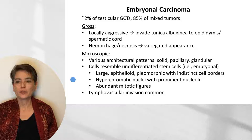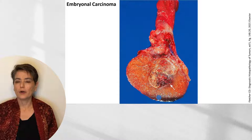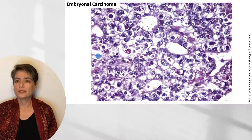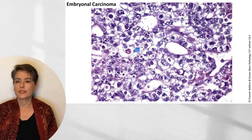Lymphovascular invasion is common. Here at the gross level you can see the spermatic cord and healthy testis with the focus of embryonal carcinoma indicated, with an arrow pointing to an area of hemorrhage. In contrast to seminoma, there is a variegated appearance. Microscopically, you can see these large cells with a slight glandular architecture, mitotic figures, and a fair amount of pleomorphism — variation in size and shape.